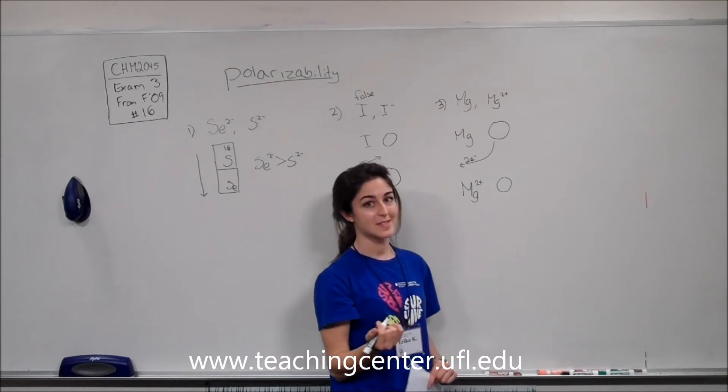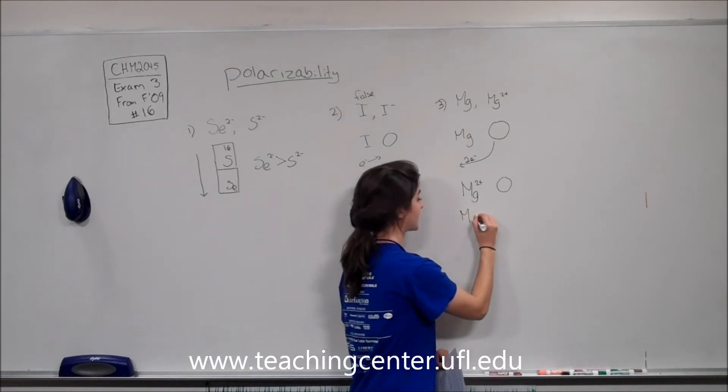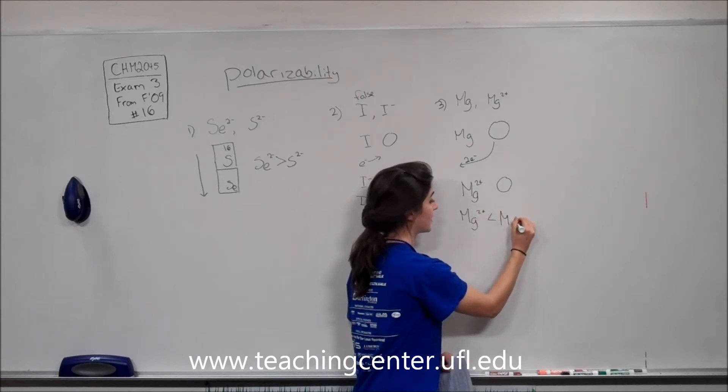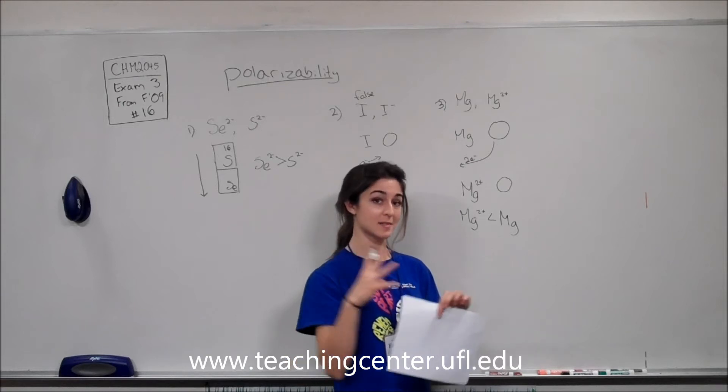With it being smaller, that means it's less polarizable. So magnesium 2 plus is less polarizable than its parent atom because the atom is smaller.